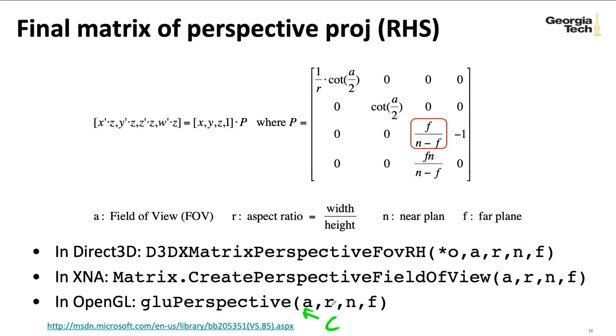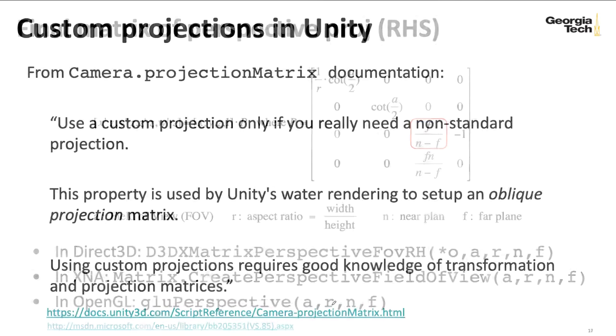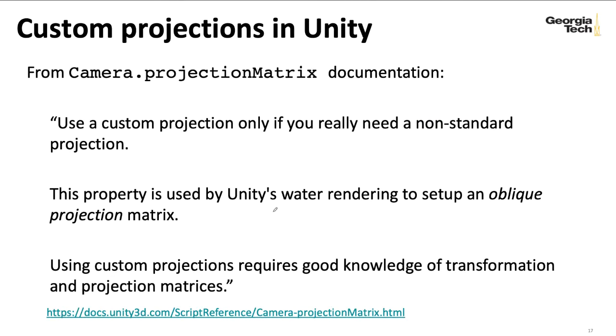You can create your own projection matrices in Unity using either the kinds of routines we've talked about, or you could write something that does some sort of really weird bespoke matrix. Your camera has an instant variable projection matrix that you can assign that to.